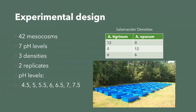Using a regression design, I will have 42 different mesocosms with seven different pH levels, each with three different densities and two replicates each. The pH levels will be 4.5, 5, 5.5, 6, 6.5, 7, and 7.5. Tanks with only one species will account for intraspecific competition and the impact of pH on that species alone, while mesocosms with both species will account for the impact of pH on interspecific competition. In total, I will have 252 larval salamanders of each species, for a total of 504 larval salamanders.